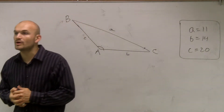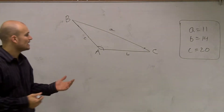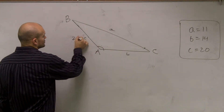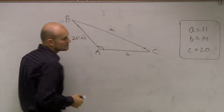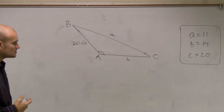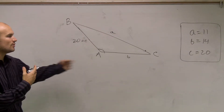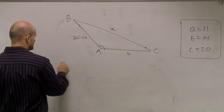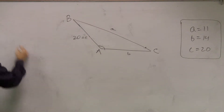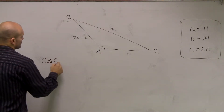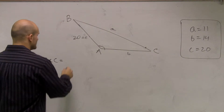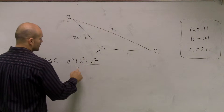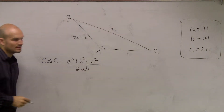Our largest side length is 20, so let's find the cosine of angle C. I know C is equal to 20. Let's figure out what the cosine of C is. Cosine of C is going to equal A squared plus B squared minus C squared, all over 2 times A times B.